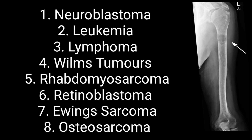Lymphoma metastases can also be seen in pediatric bones, especially non-Hodgkin lymphoma. As for Wilms tumor, metastases to the bones of a child can also be found, and Wilms tumor arises from the kidney.